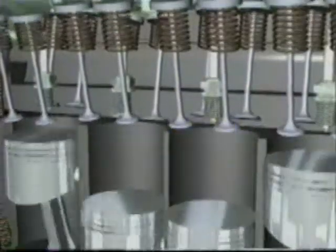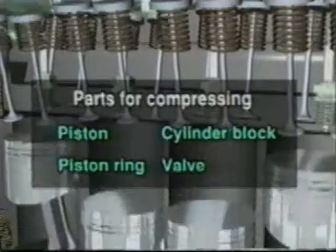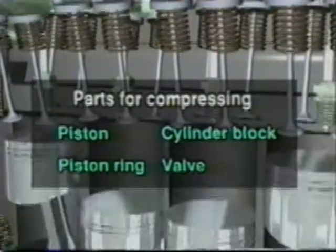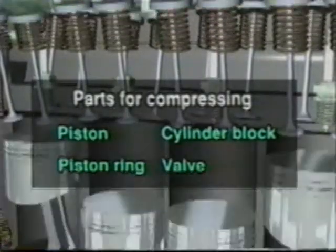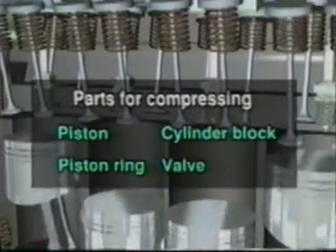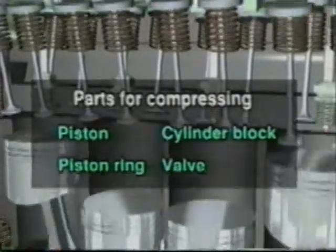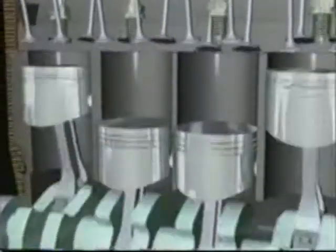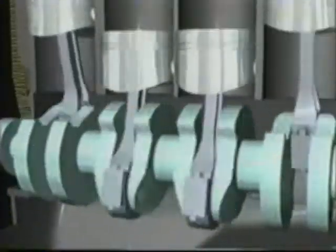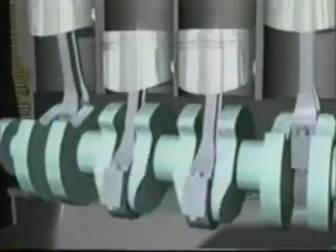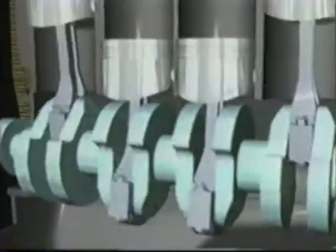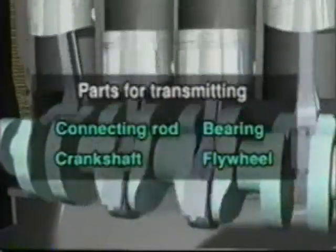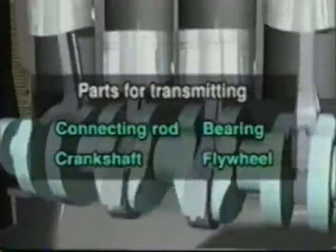Parts for compressing the air-fuel mixture are the pistons, piston rings, cylinder block, valves, etc. Parts for transmitting engine power are the connecting rods, crankshaft, bearings and flywheel.